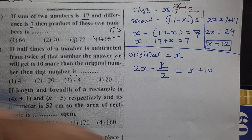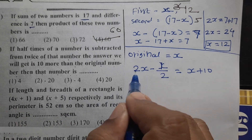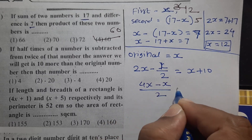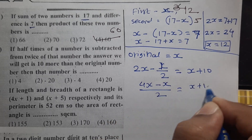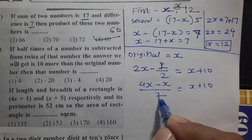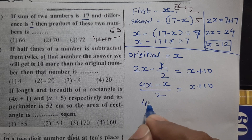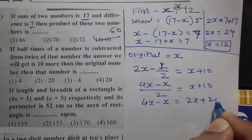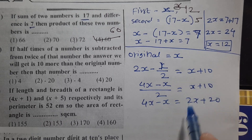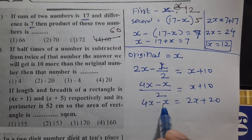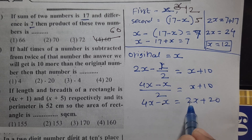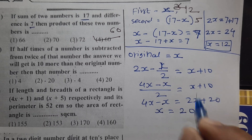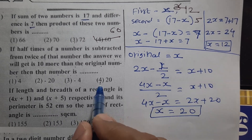Using cross multiplication: 4x minus x upon 2 equals x plus 10. Multiplying both sides by 2: 4x minus x equals 2x plus 20. So 3x minus 2x equals 20, giving x equals 20. The original number is 20, option number 4.